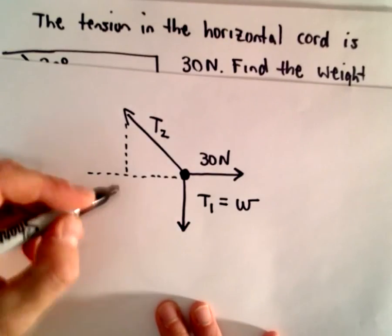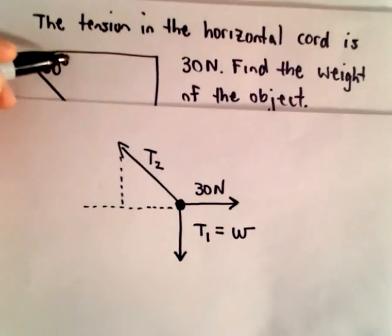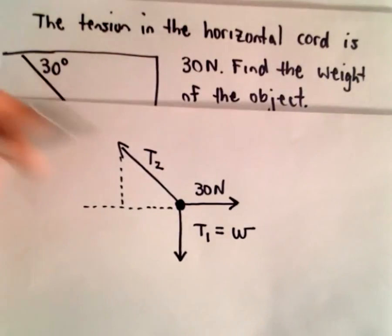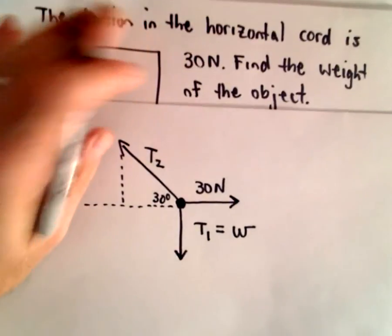Alrighty, so again, to do this, we can just use a little bit of basic trigonometry. This angle is 30 degrees, so we can conclude that this is also 30 degrees, just basic geometry there.